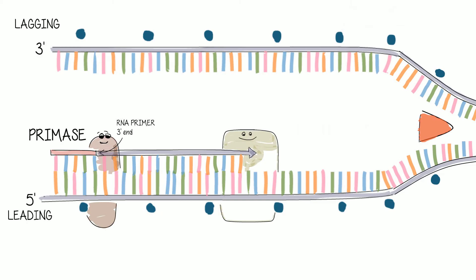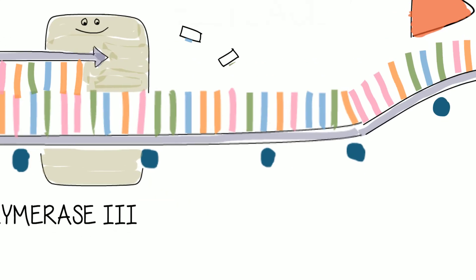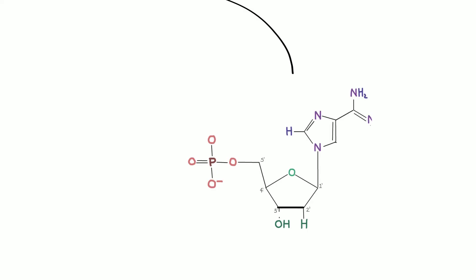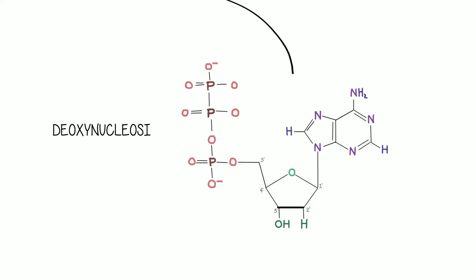DNA polymerase can only work in a five-prime to three-prime direction. On the leading strand, it can synthesize continuously — the polymerase attaches free nucleotides according to complementary base pairing. Free nucleotides are in the form of deoxynucleoside triphosphates and have additional phosphate groups that provide energy for the formation of covalent phosphodiester bonds in the sugar-phosphate backbone.